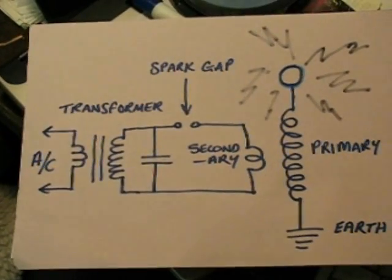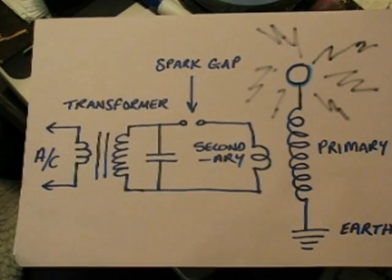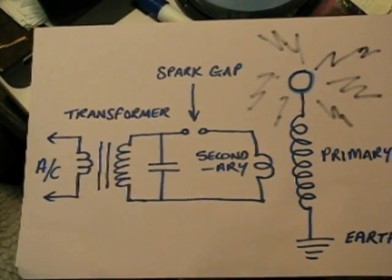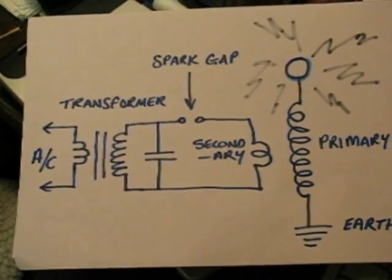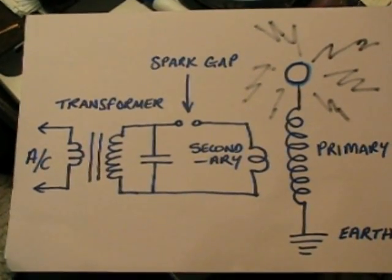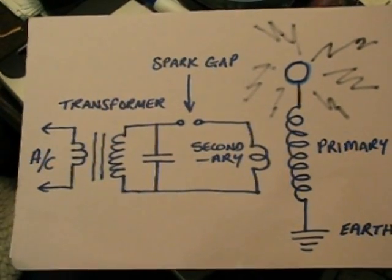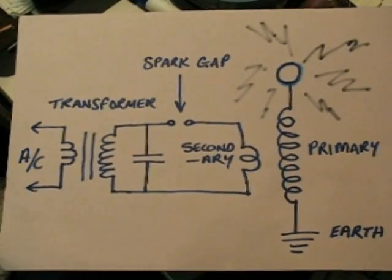And that, in tune with the secondary of the first transformer, sets up a resonant induction in the primary of the receiver. One end of that primary receiver is grounded to earth and the other end has what I can only describe as a van de Graaff dome on the top.